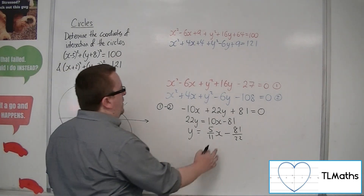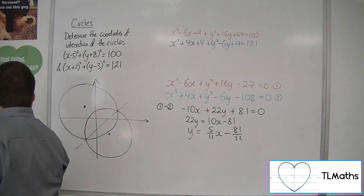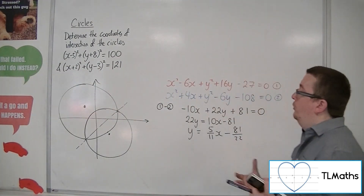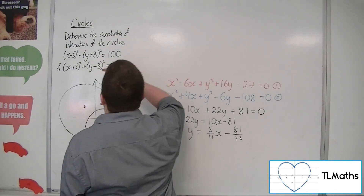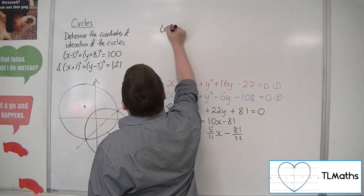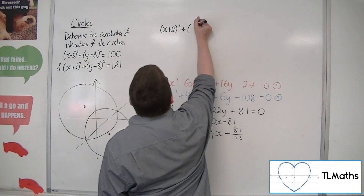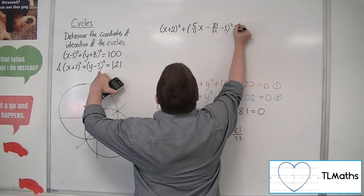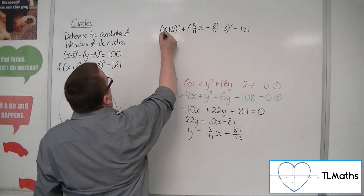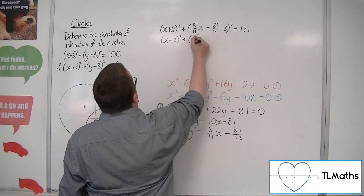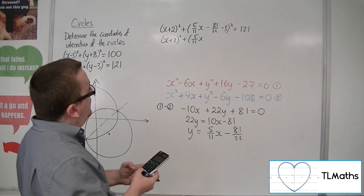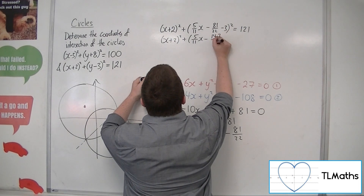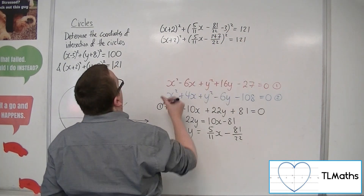I can now substitute that into either of the two original circle equations in order to solve the resulting equation. I'm going to substitute it into number 2, the second circle. So x plus 2 squared plus, now y is 5 elevenths x minus 81 over 22, and then we've still got that minus 3 squared equals 121. So x plus 2 squared plus 5 elevenths x minus 147 over 22, all squared, equals 121.